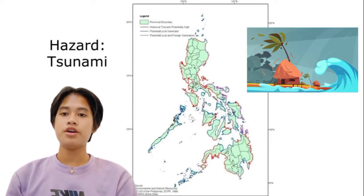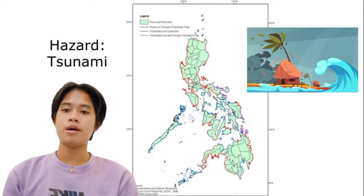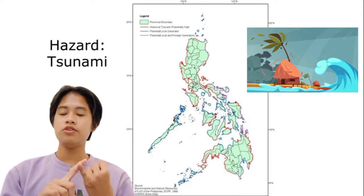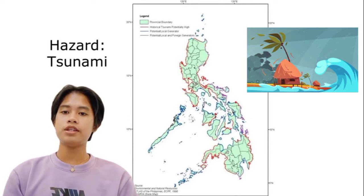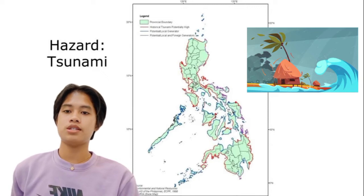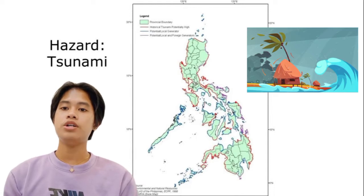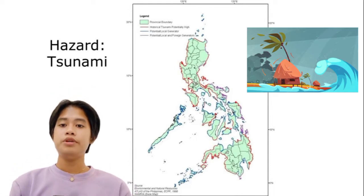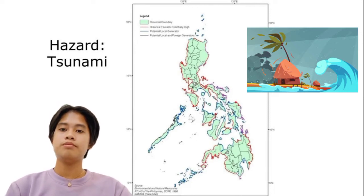Tsunamis in the Philippines are rare but could be devastating. Coastal areas — especially those facing the Pacific Ocean, South China Sea, Sulu Sea, and Celebes Sea — can be affected by tsunamis generated by local earthquakes, as indicated by lines on the map showing high tsunami risk. Tsunamis usually result from an earthquake below or near the ocean floor. Beaches, lagoons, bays, estuaries, tidal flats, and river mouths are the most dangerous places to be. It is rare for a tsunami to penetrate more than a mile inland.